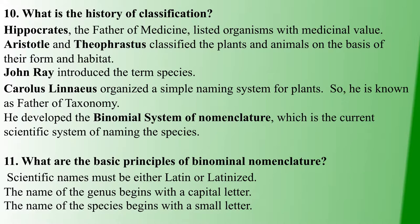We are now following the binomial system of nomenclature. In binomial nomenclature, all scientific names are either Latin or Latinized. The first part is the genus name written with a capital letter, and the second part is the species name written with a small letter.